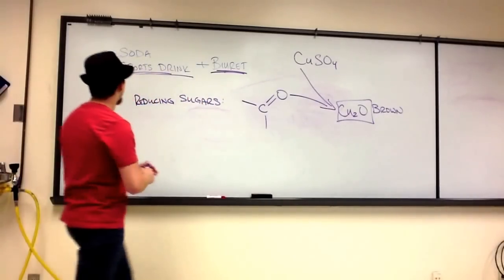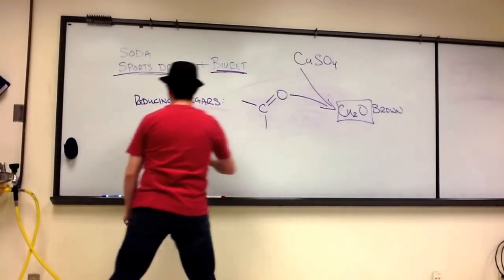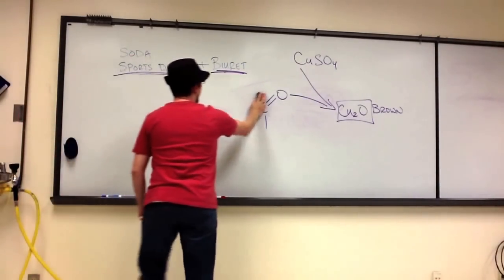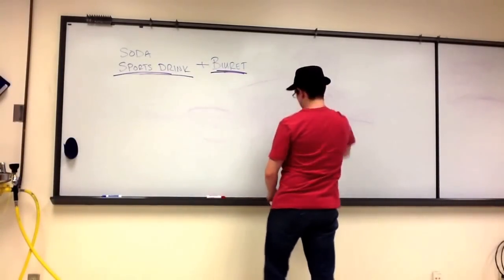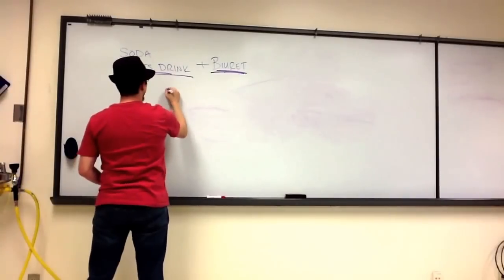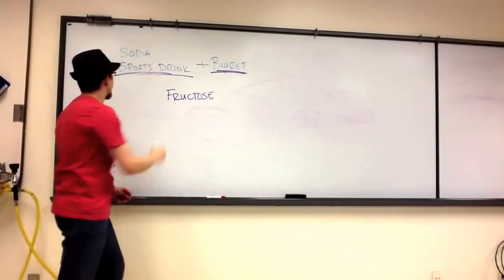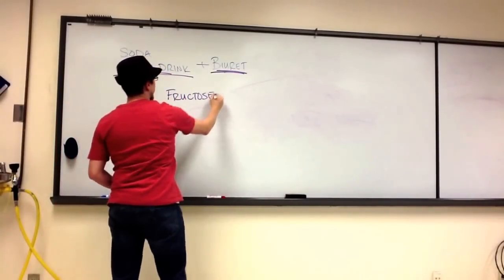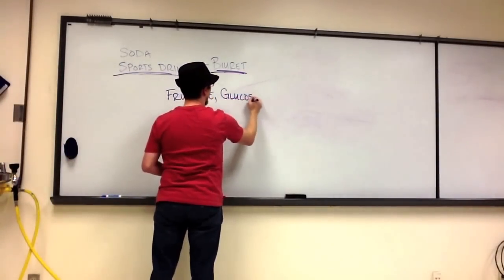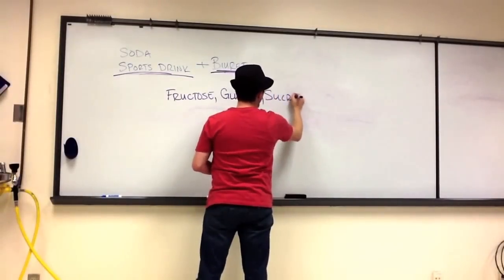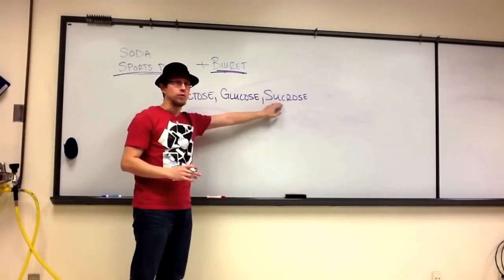Now the question we have to ask is, do soda and sports drink potentially contain reducing sugars? And if so, which ones? What you found by going through the ingredients list of those two solutions is that between the two, we had in sports drink, we had fructose in high fructose corn syrup, in soda we had fructose, in sports drink we had dextrose, which is also glucose, we had sucrose, and if you didn't do the background research, we can't say right now if we do or don't know that this is a reducing sugar.